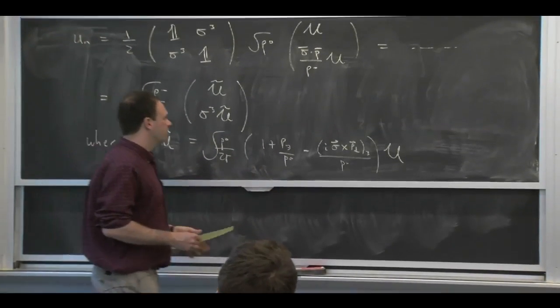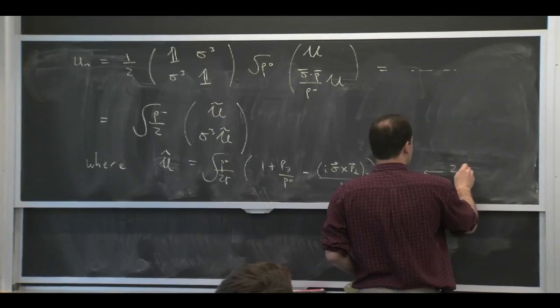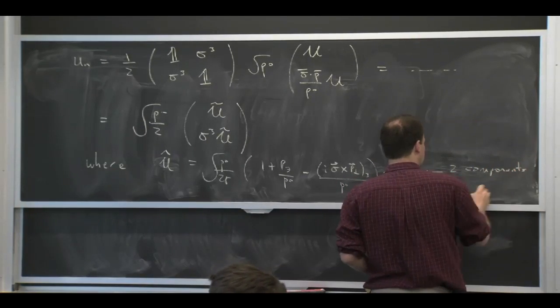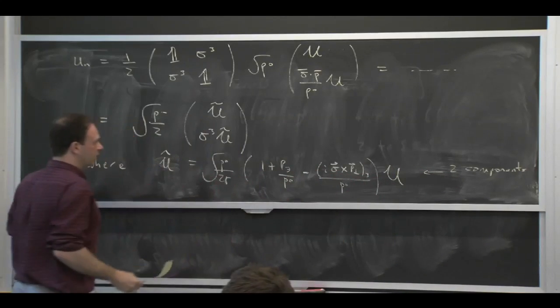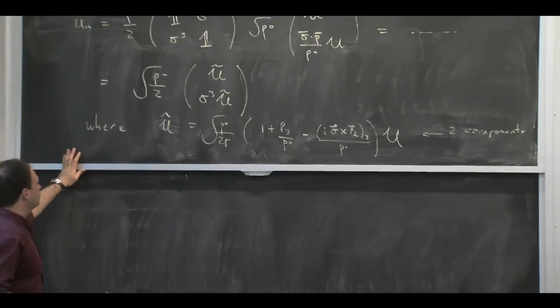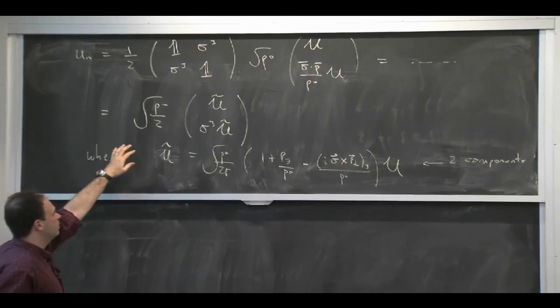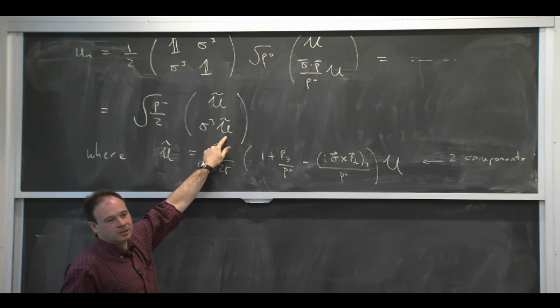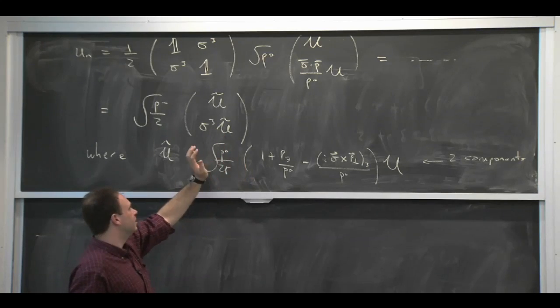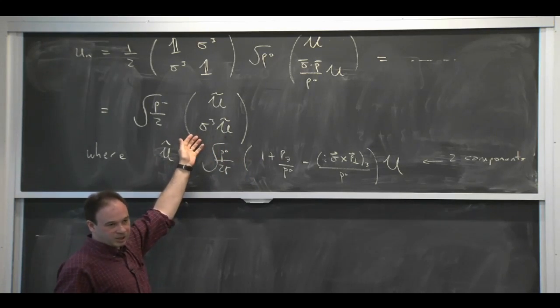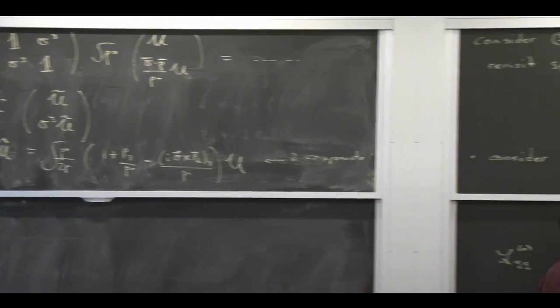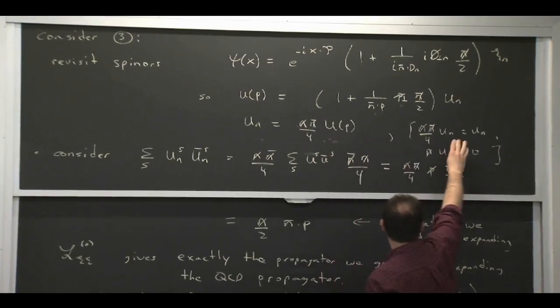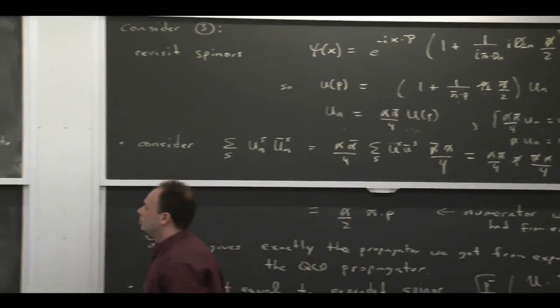And it's just whatever I get by multiplying these two things out, which turns out to be something I can write in that form. So it's some two-component spinner, but it's got momentum dependence, unlike our simple 1, 0 and 0, 1. But everything we said about Un really depended only on the fact that it could be written in this form in terms of some two-component spinner, the fact that n slash on it was 0, the fact that it had a projection relation.